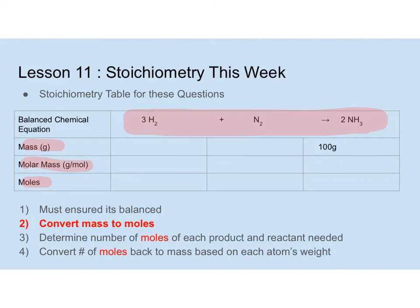Then you have a row for mass, a row for molar mass which we get from the periodic table, and then a row for moles. Once you have this table completely set up, it makes these questions really, really easy. We're going to fill out this table and go through all these steps, then I'll show a slightly simpler way to work through them.